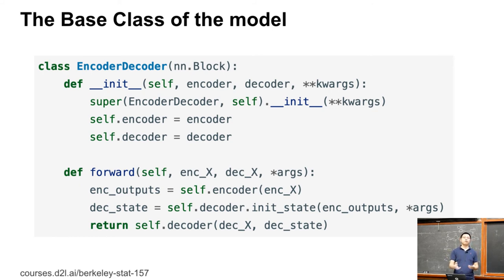And to run the forward of a decoder, we just pass in the decoder input and the state to get the output. So this is a general way for the encoder and decoder model. Different implementations of the encoder and the decoder will give you different models, but this model will have the same architecture. Any questions so far?